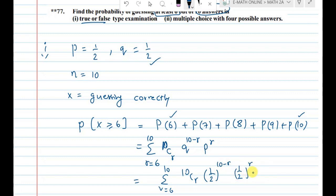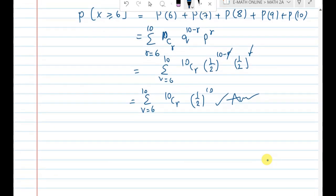After calculation, we get sigma r equal to 6 to 10, 10Cr, 1 by 2 power - here minus r plus r cancel out, so power 10. This is the answer to my first question.